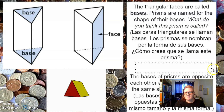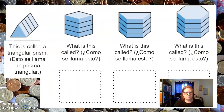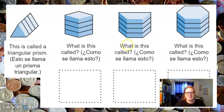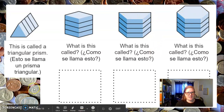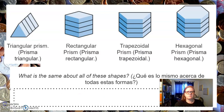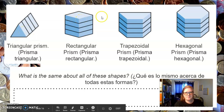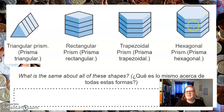Go ahead and take your guess, pause the video, and then come back. What it is called is a triangular prism, because the base is a triangle. Now I want you to take guesses on what these are called. The base of this is actually a square or rectangle. The base here is a trapezoid. And the base here is a hexagon. So we have a triangular prism, a rectangular prism, a trapezoidal prism, and a hexagonal prism. What is the same about all of these shapes?